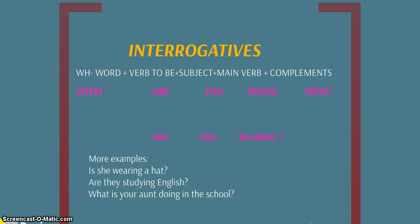In the questions we also use the verb to be as an auxiliary. And we have the common order of the elements in a question. First the WH word, then the verb to be, then the subject, then the main verb, and last but not least, the complements. For example, what are you doing now? Or are you reading? You have more examples. Is she wearing a hat? Are they studying English? What is your aunt doing in the school? Very simple.